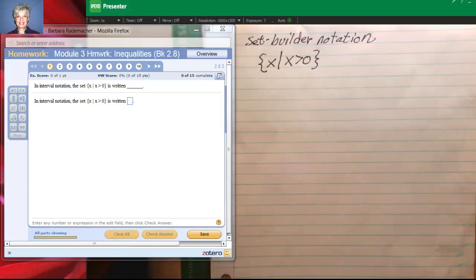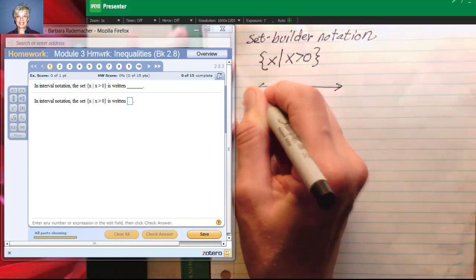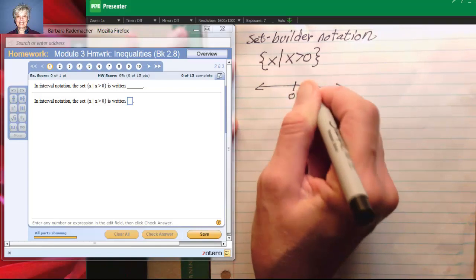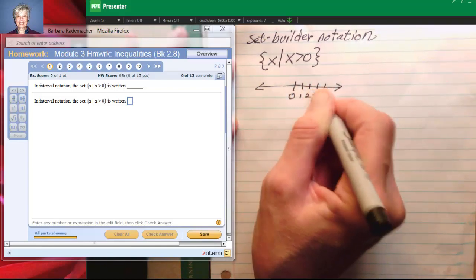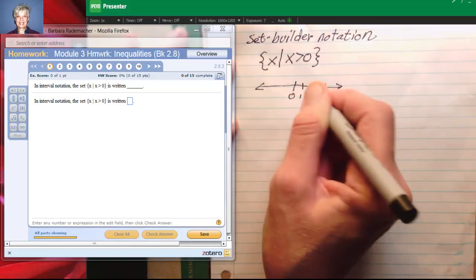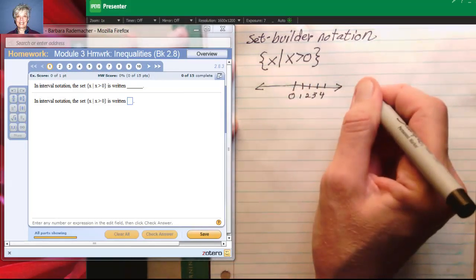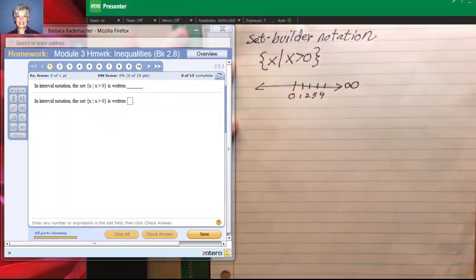If you were graphing this you would graph a number line. Let's have zero in the middle here, and then one, two, three, four, numbers like that. And the numbers just get bigger as you go out to the right. And so the symbol for that is a sideways eight, which is infinity.